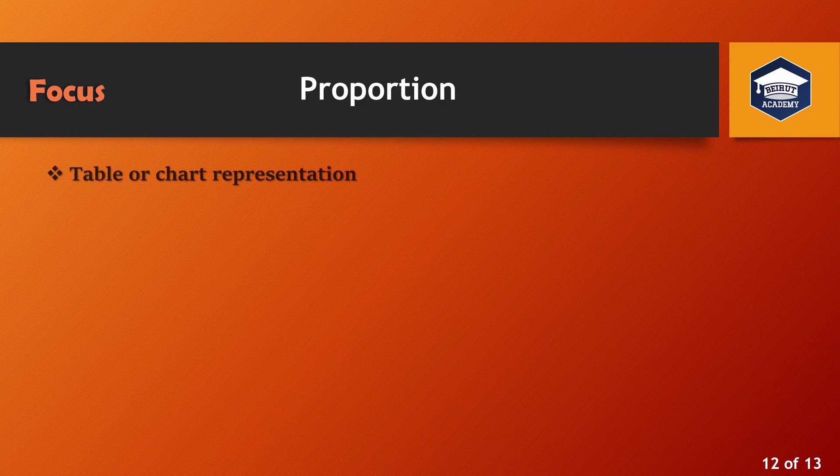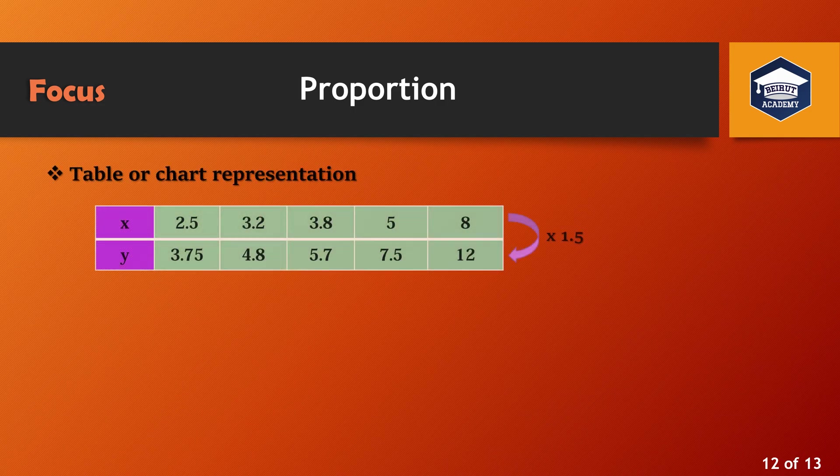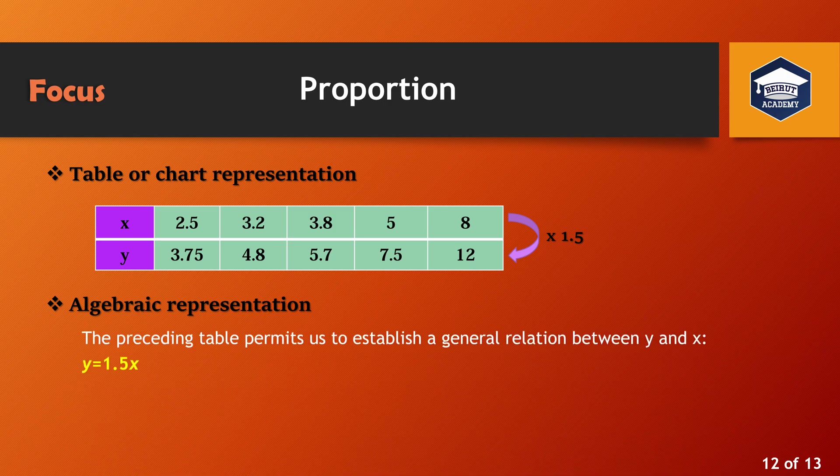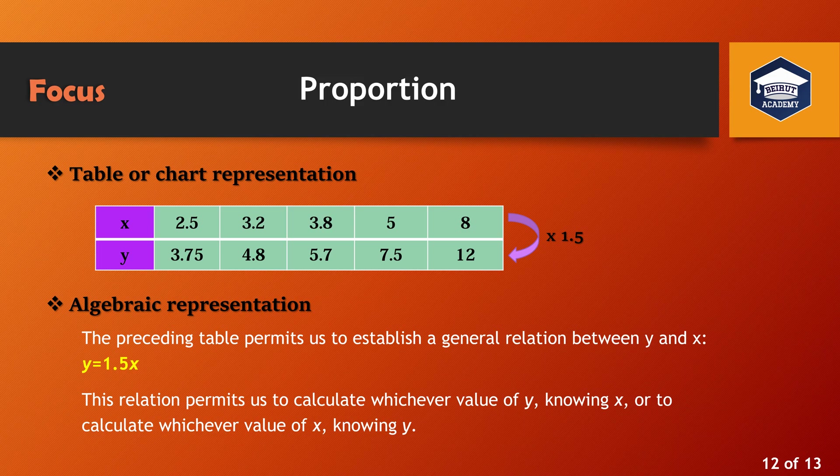Table or chart representation. Algebraic representation. The preceding table permits us to establish a general relation between Y and X: Y equals 1.5 X. This relation permits us to calculate whichever value of Y knowing X, or to calculate whichever value of X knowing Y.